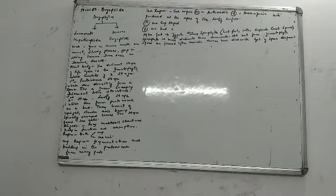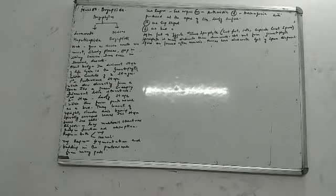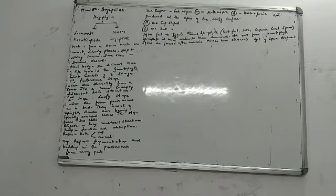For sexual reproduction, the male sex organ is called the antheridium and the female sex organ is called the archegonium. Both organs are produced at the apex — the top — of the leafy structure, since sex organ development begins at the leafy stage.